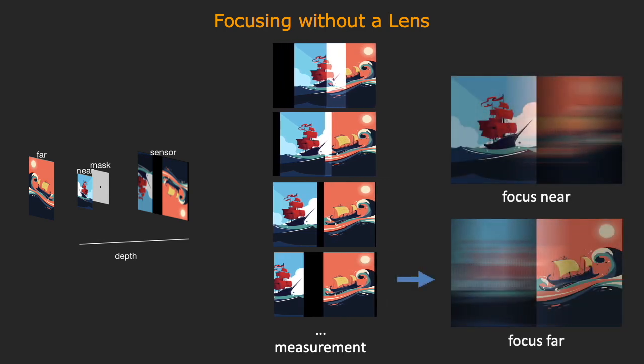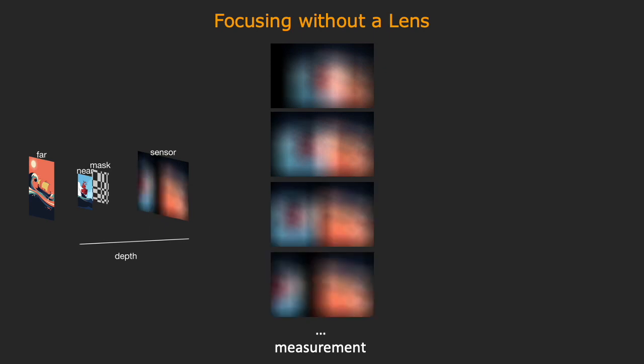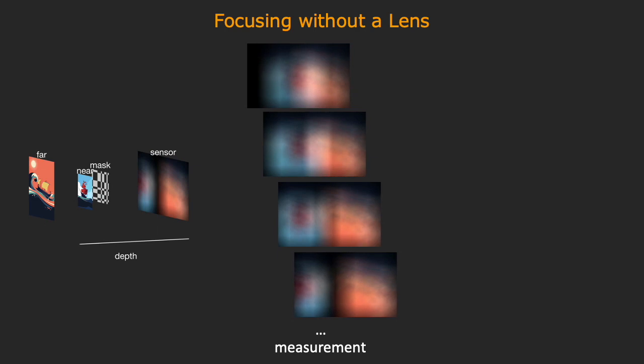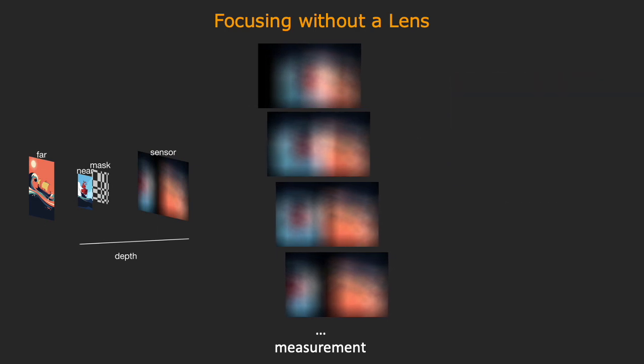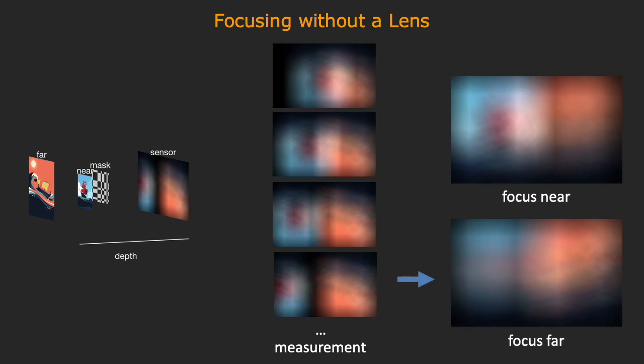We can do the same for the far plane. The same focusing operator can be applied to lensless measurements with more light-efficient masks. Using focus to emphasize measurements from the near plane versus the far plane — note that in the focus-near image, the red bolt in the near plane is more visible than in the focus-far image. The focusing operator suppresses contribution from other depths.